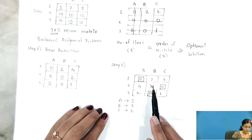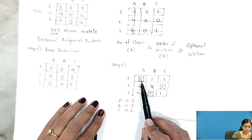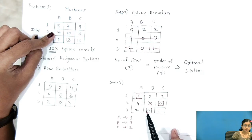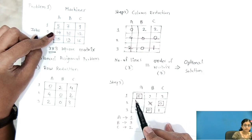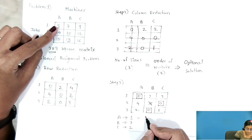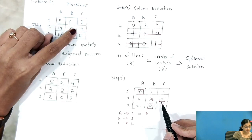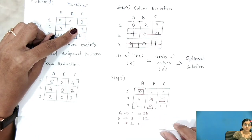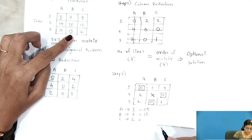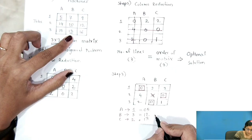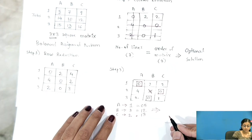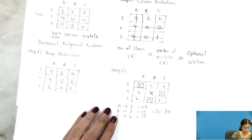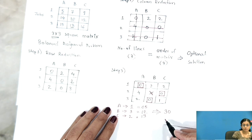To find the optimal solution value, we refer back to the original cost matrix and read the values at the assigned positions. Machine A to Job 1 corresponds to a cost of 5, machine C to Job 2 corresponds to 12, and machine B to Job 3 corresponds to 13. Adding these together: 5 + 12 + 13 = 30, which is the optimal solution.